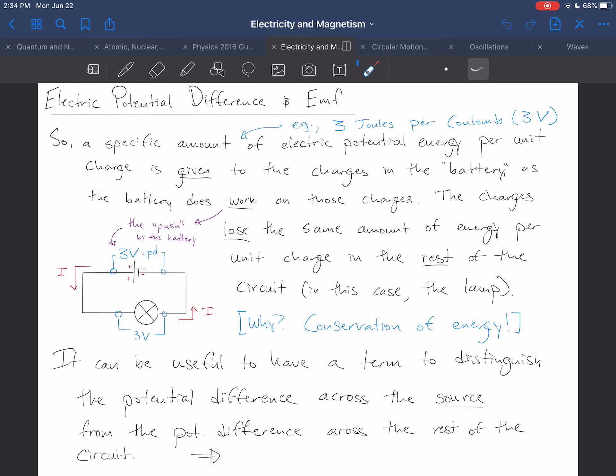Now, it's important to recognize, they're the same number. If energy is given, three volts, it must be given back, three volts here. So, the number is the same. The amount of energy given is the same as the amount of energy lost. But it'd be useful to have a term that only refers to the amount of energy given, for example.